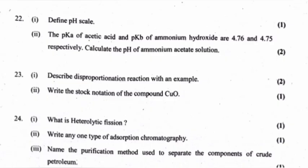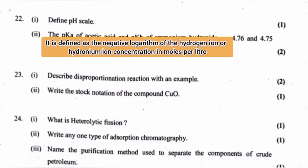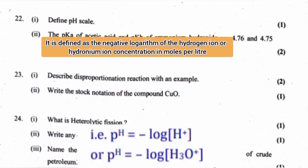Define pH scale. It is defined as the negative logarithm of the hydrogen ion concentration in moles per liter.